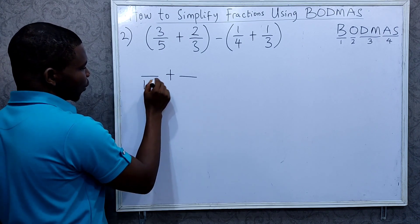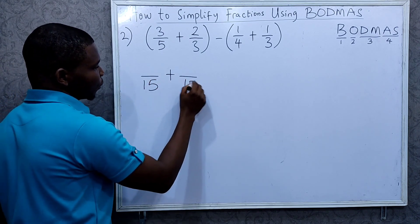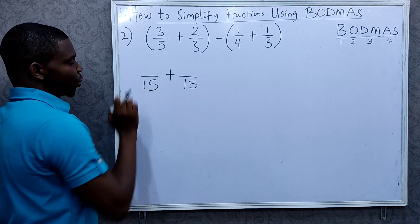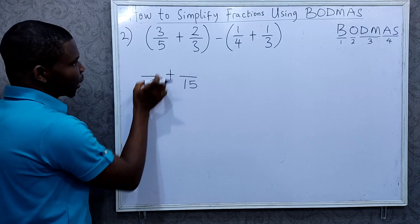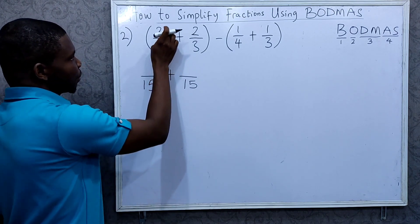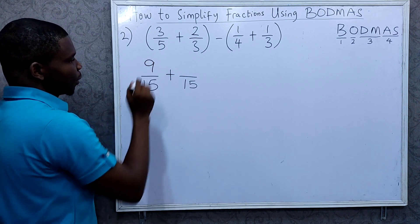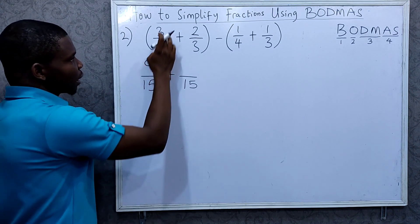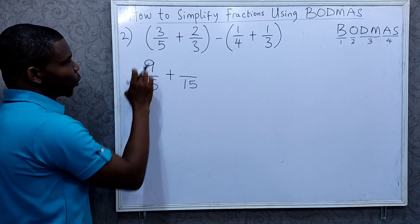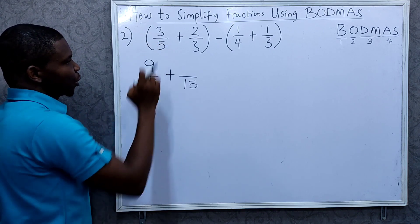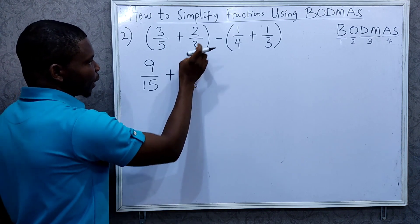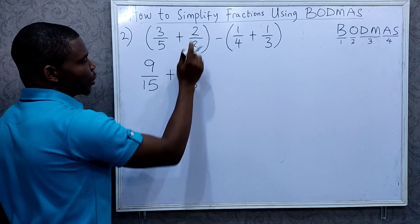The LCM of 5 and 3 is 15, so I'm going to write 15 here and 15 here. Then for the numerator: 15 divided by 5 is 3, and 3 times 3 is 9. So 9 over 15 is the same thing as 3 over 5 — these are equivalent fractions. Then for the other fraction: 15 divided by 3 is 5, and 5 times 2 is 10.